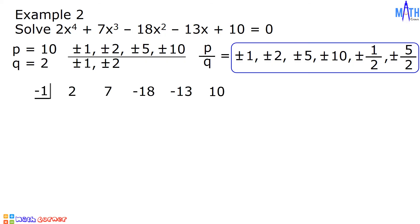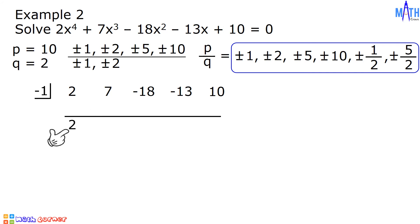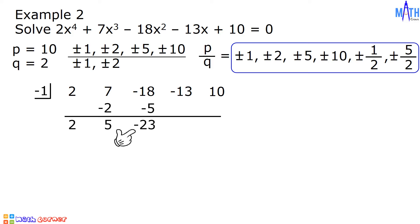Next, let us try negative 1. Bring down 2. Negative 1 times 2 equals negative 2. 7 plus negative 2 equals positive 5. Negative 1 times 5 equals negative 5. Negative 18 plus negative 5 equals negative 23. Negative 1 times negative 23 equals positive 23. Negative 13 plus 23 equals positive 10. Negative 1 times 10 equals negative 10. 10 plus negative 10 equals 0. Since the remainder is equal to 0, negative 1 is one of the roots of this polynomial equation.